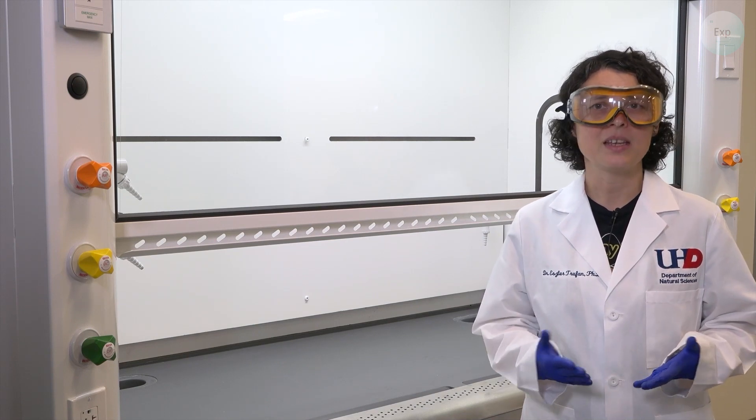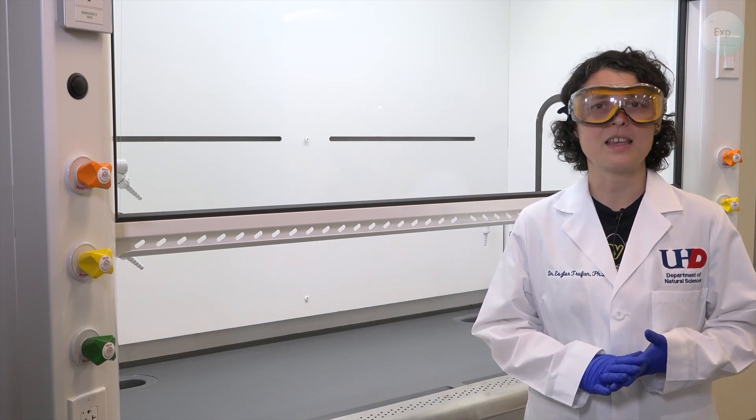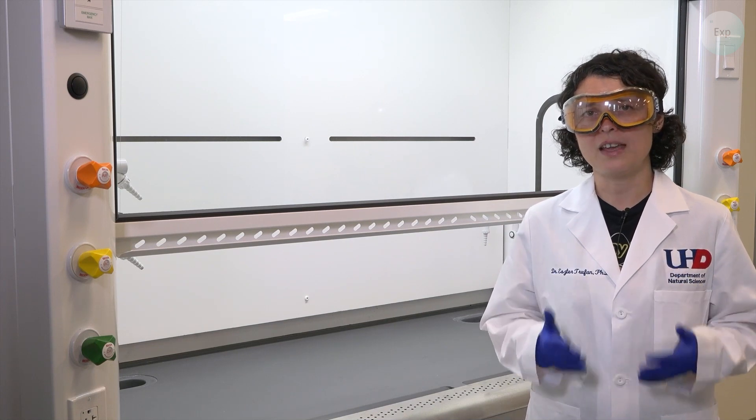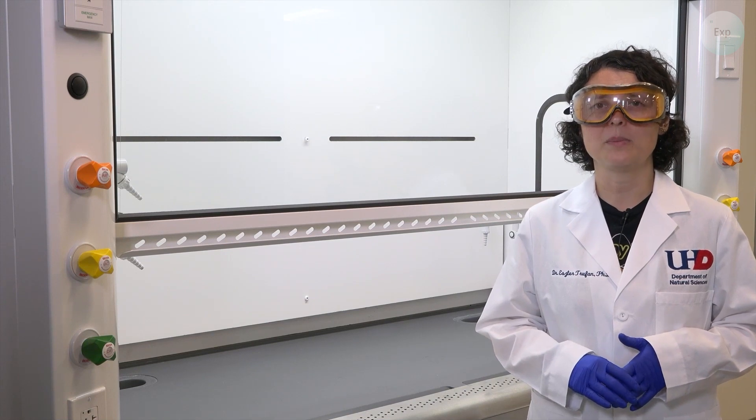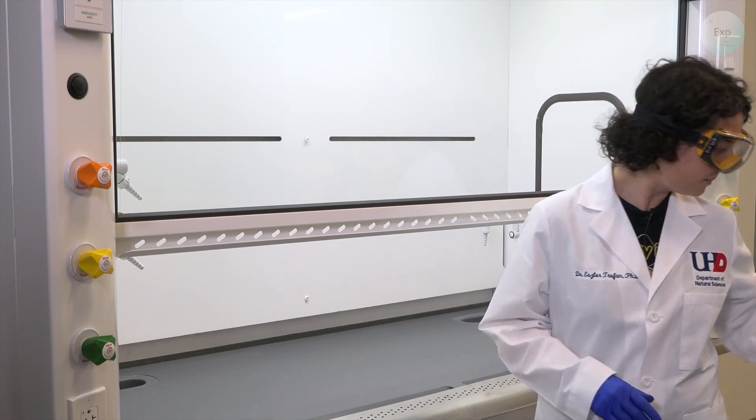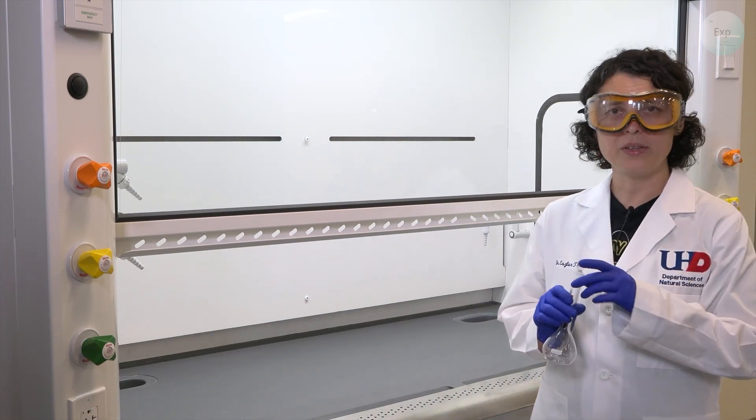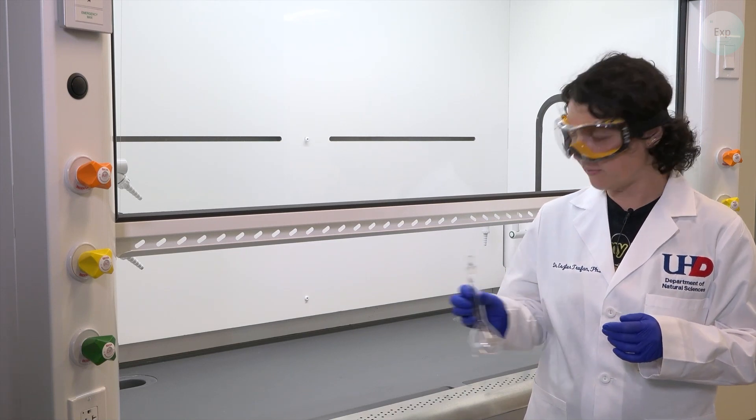So let's get started. The first thing that we're going to need is a volumetric flask because one should never make a solution in any other container than a volumetric flask. For today's experiment we're making 100 milliliters of solution, so we will need a 100 milliliter volumetric flask.